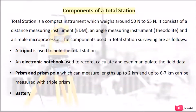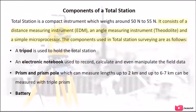Components of a Total Station: Total Station is a compact instrument which weighs around 50 to 55 N. It consists of a distance measuring instrument (EDM), an angle measuring instrument (Theodolite), and a simple microprocessor.